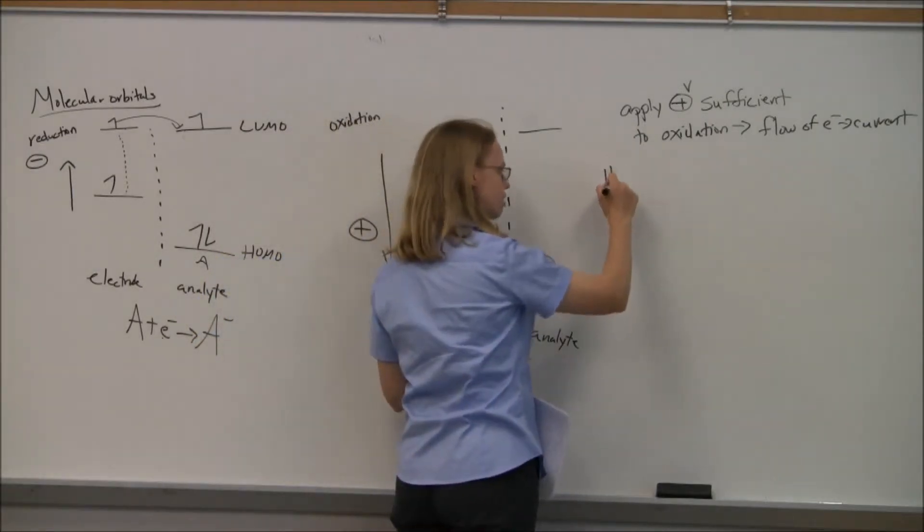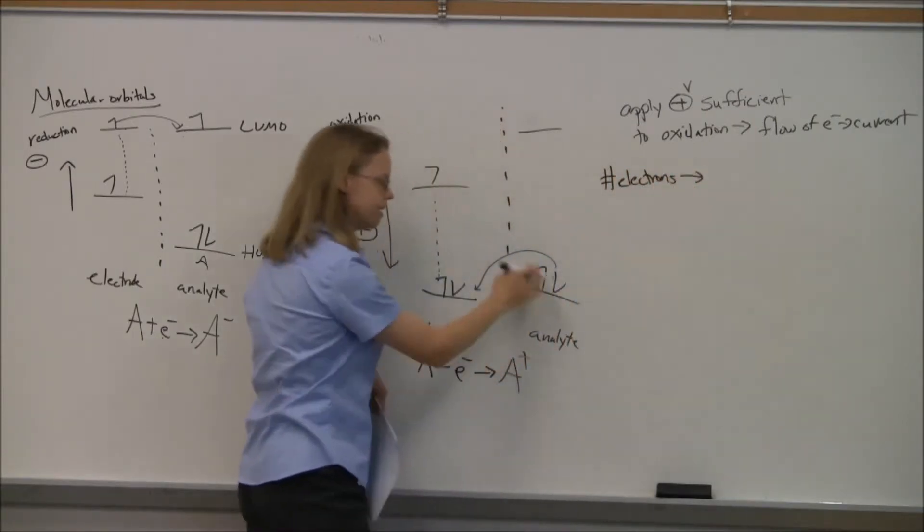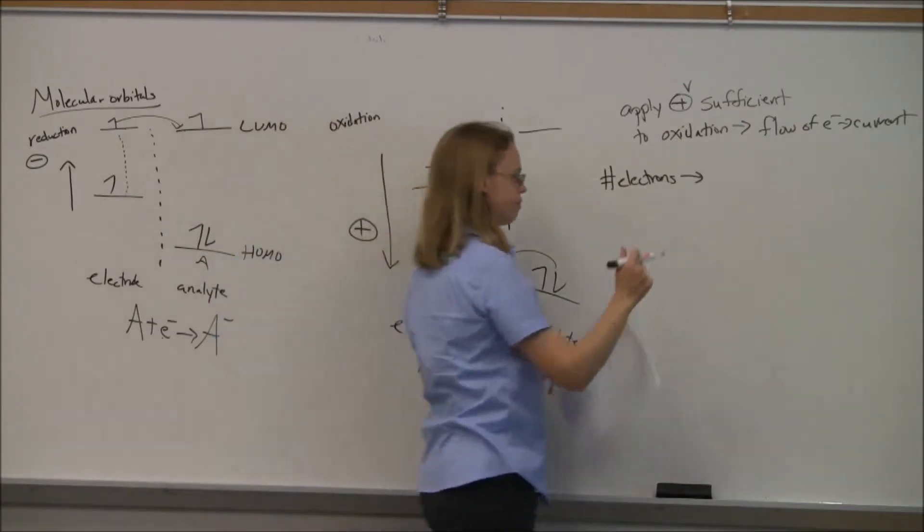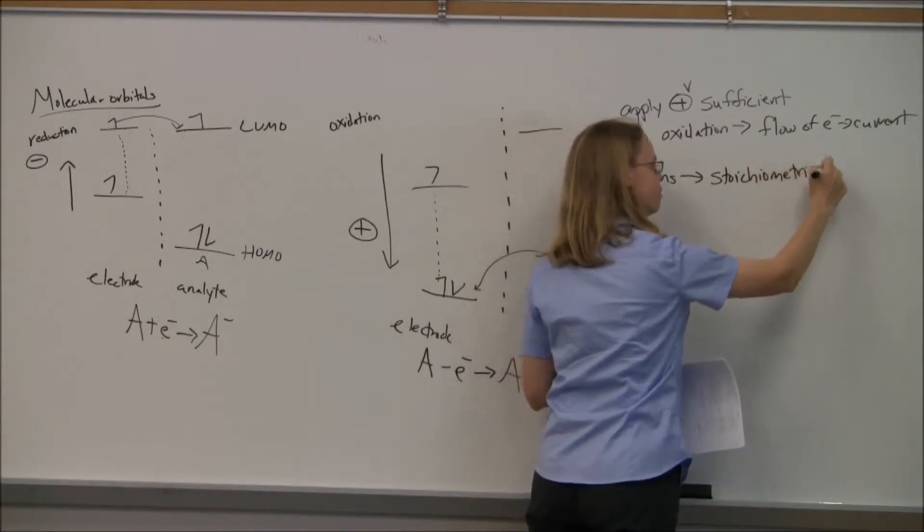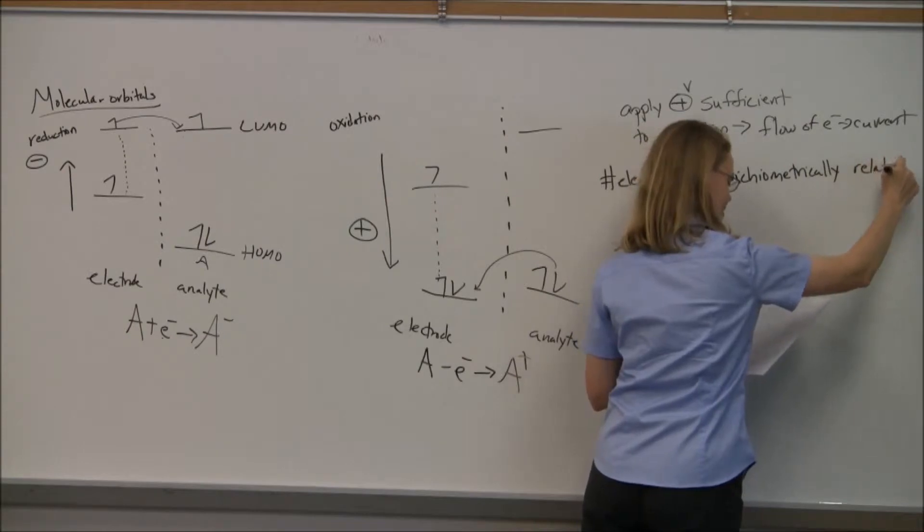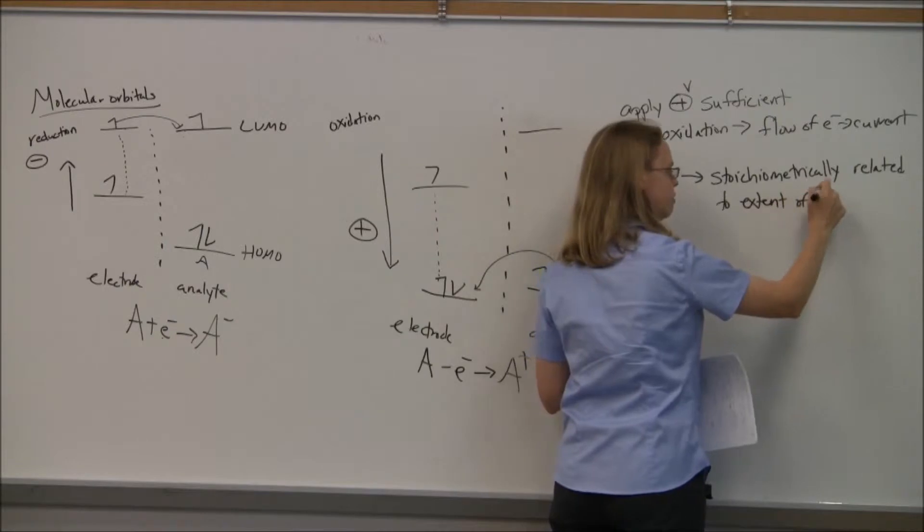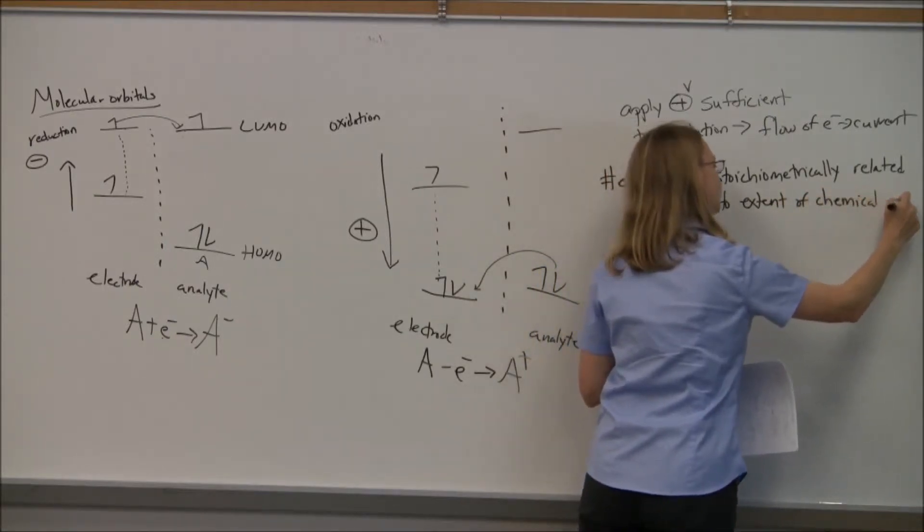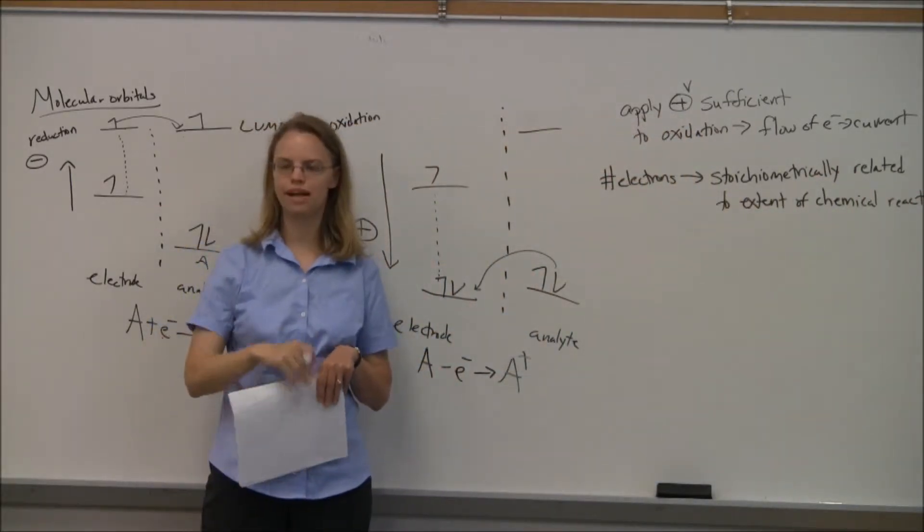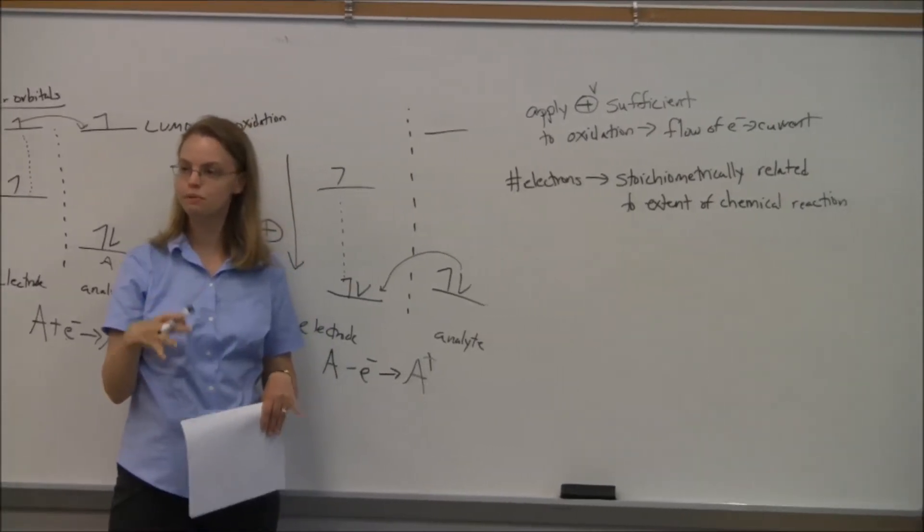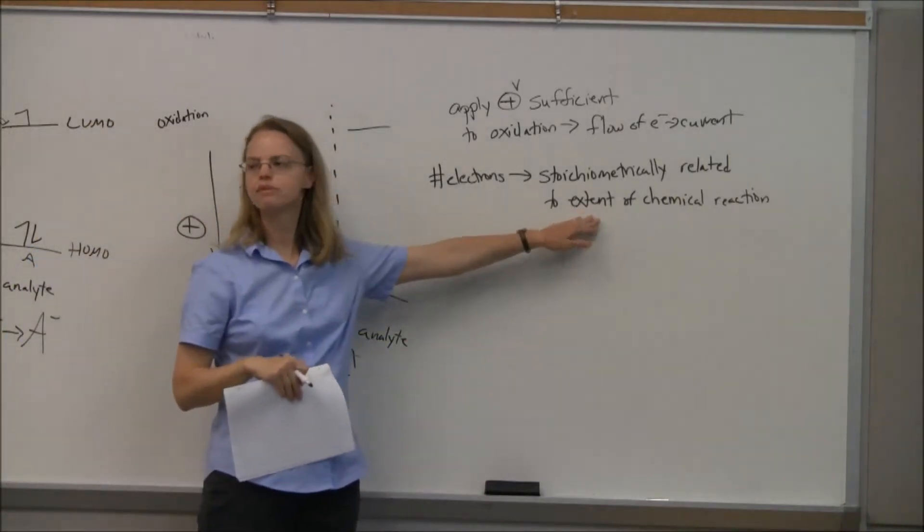The number of electrons that we get doing this kind of reaction is stoichiometrically related to the extent of chemical reaction. So stoichiometrically means you write out that balanced chemical equation, it's going to be based on the coefficients, the stoichiometric coefficients, to how much reaction have you got.